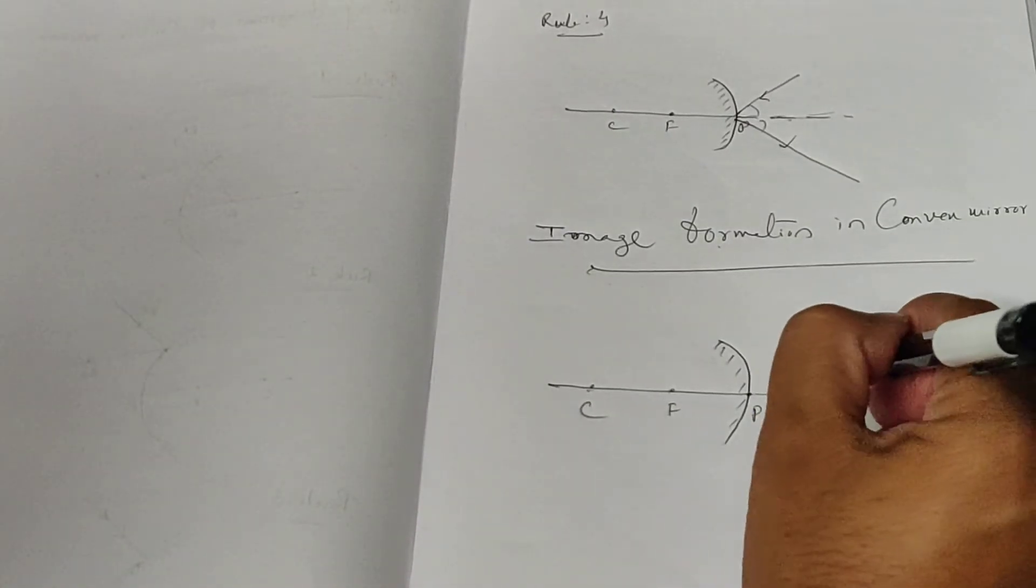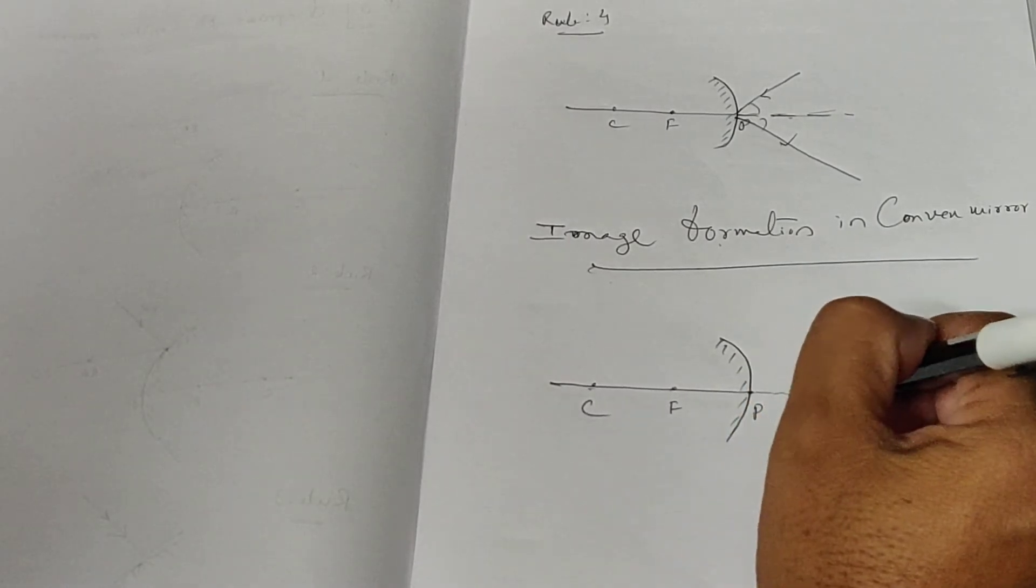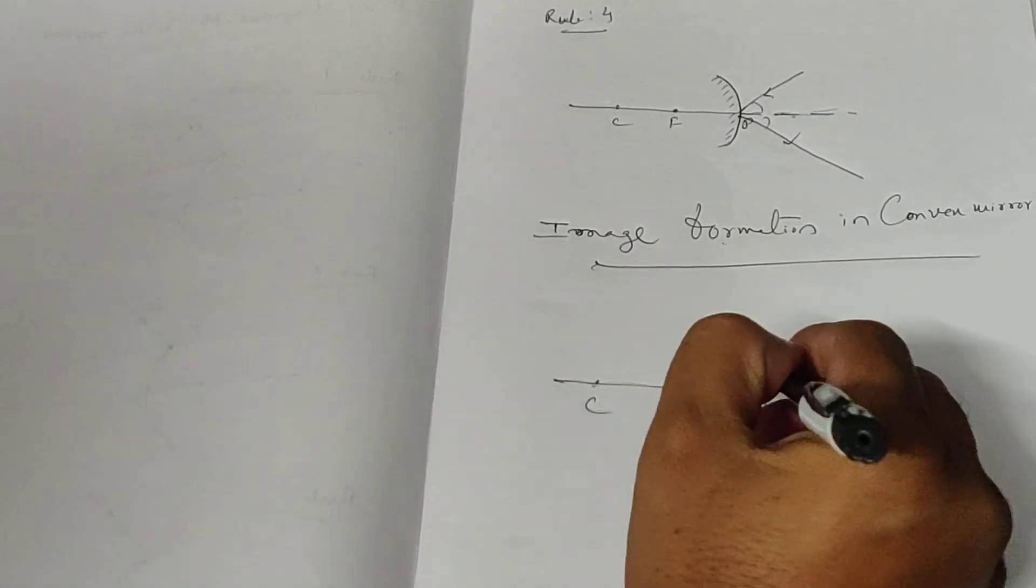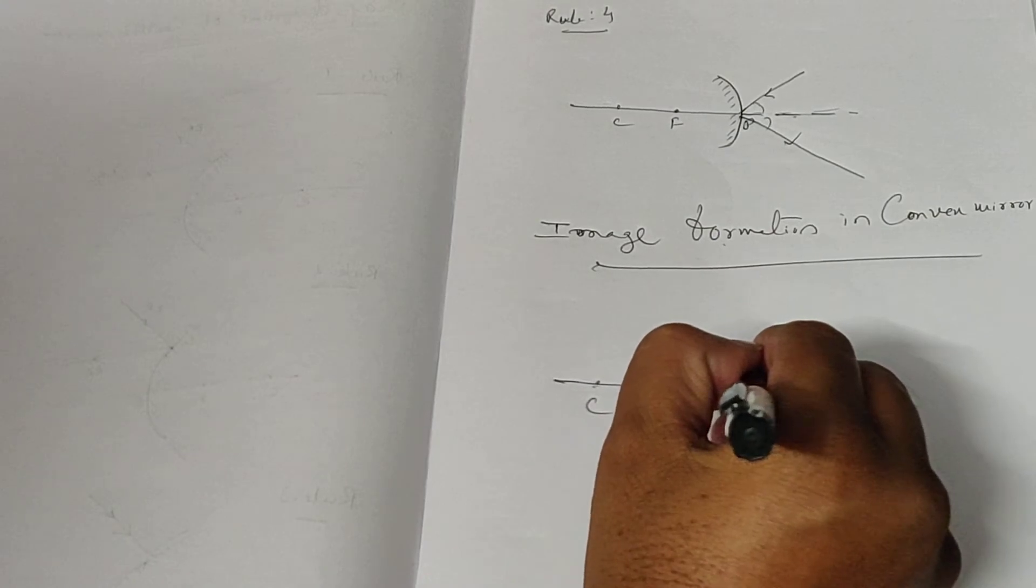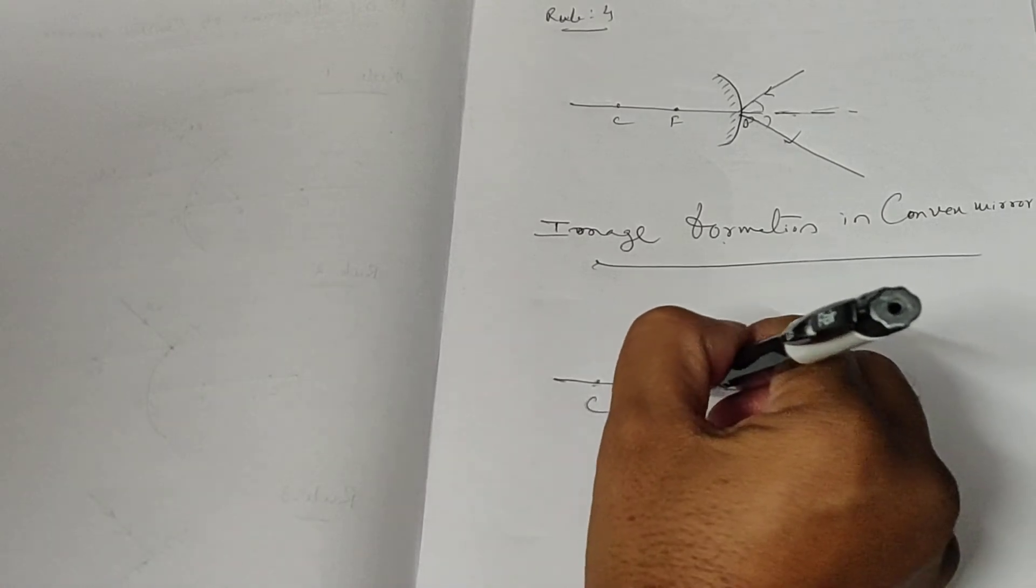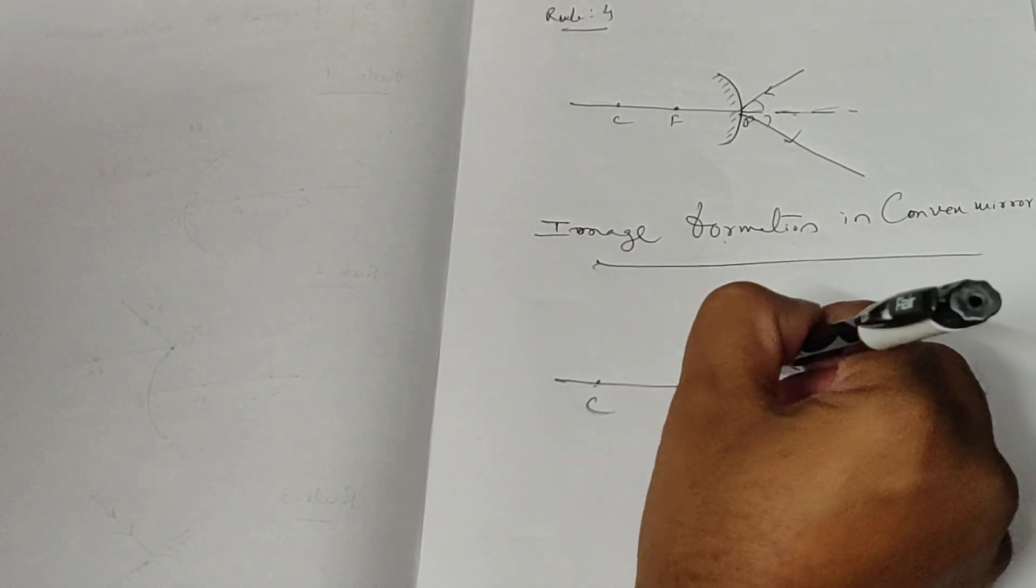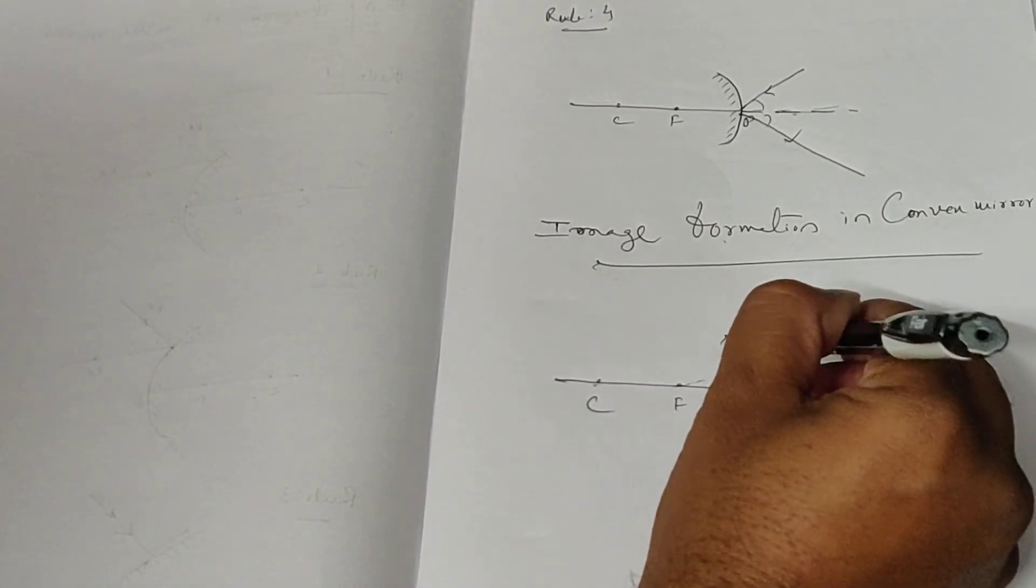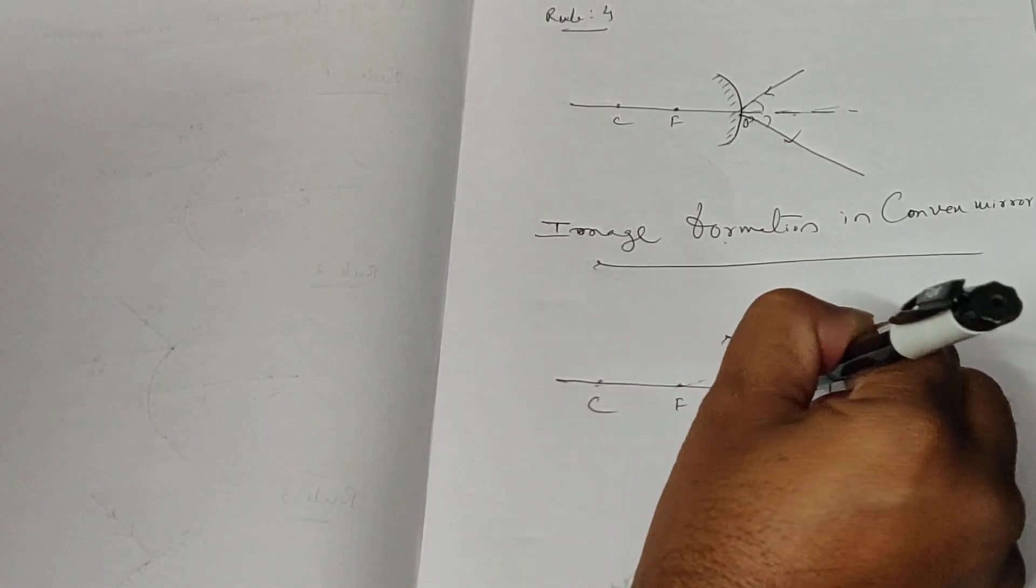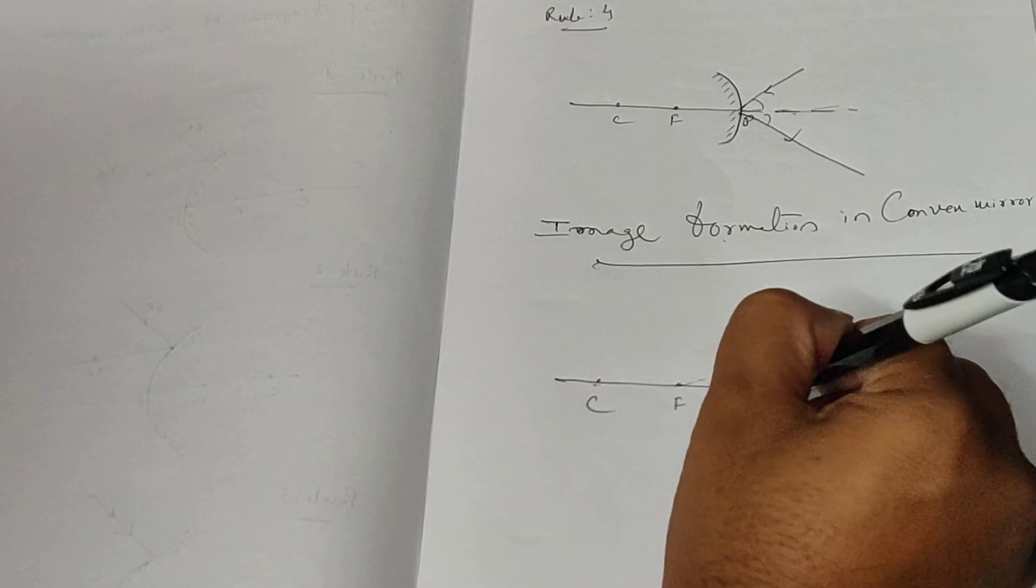If we keep any object at any point, we get the same image. For example, this is the object AB, and here one light ray is coming parallel. Any light ray coming parallel to the principal axis, after reflection, appears to be coming from focus.